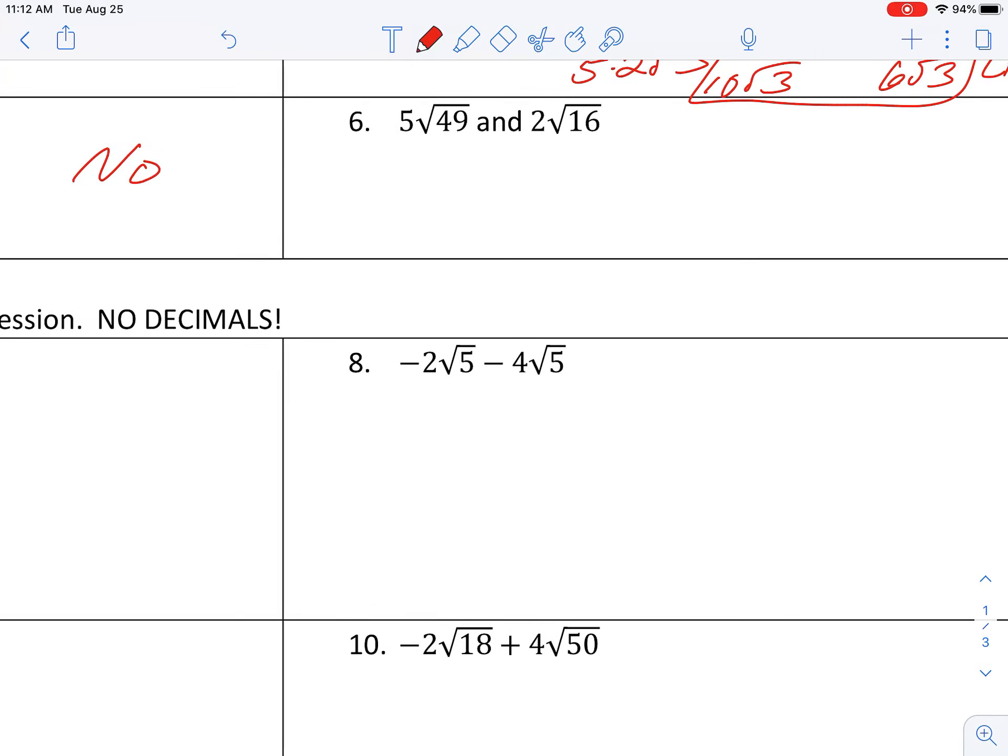Example 6. 5 root 49. Square root 49. That is perfect. 5 times 7 is 35. 16 is perfect. Square root 16 is 4. 2 times 4 is 8. So are 35 and 8 like terms? Yes. Okay. 35 and 8, those are constants. Those are like terms. There is no radical left over. It's like saying a square root of 1. And the square root of 1 is still 1. And what's 1 times 35 and 1 times 8? Still 35 and 8.